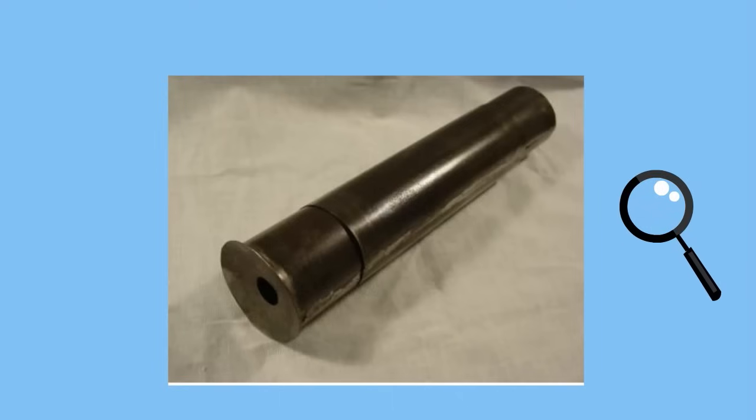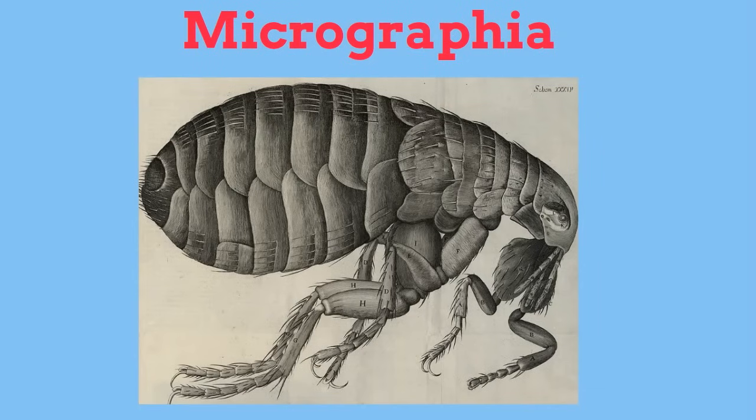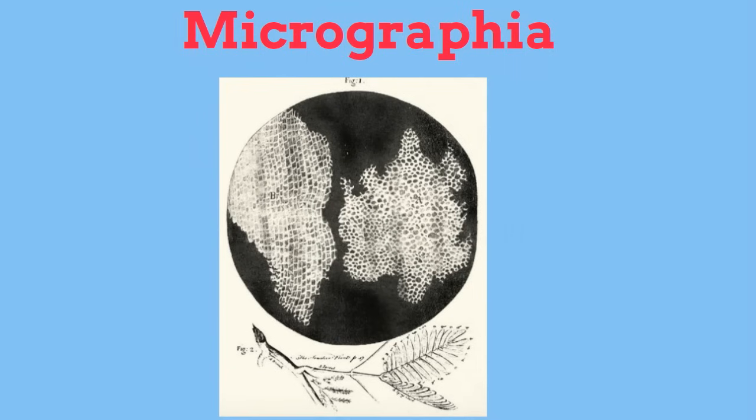In the 1660s Robert Hooke used this crude microscope and began looking at all kinds of objects. He put all of his drawings in a book called Micrographia.